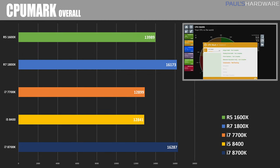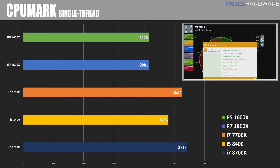Moving on to CPU Mark, which runs a bunch of different tests covering different software and different parts of the CPU's architecture. Here we actually saw the single-core advantage giving the 8700K the lead with a score of 16,287, even though it only has 12 threads versus the 1800X's 16 threads. In the single-threaded CPU Mark test, the 8700K scored a new all-time high of 2,717 — beating the 7700K's 2,627 — while the Ryzen CPUs lagged behind with scores just over 2,000.